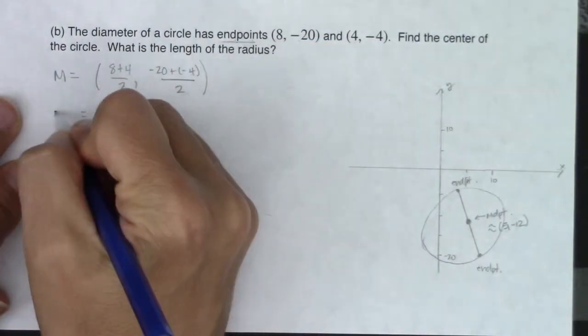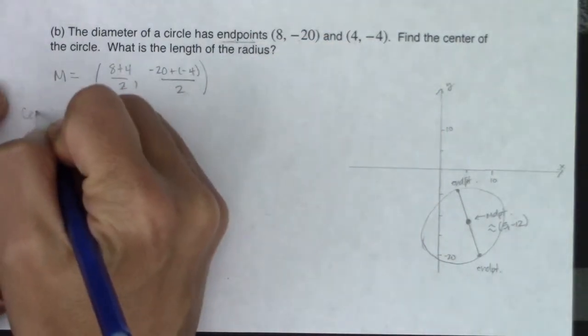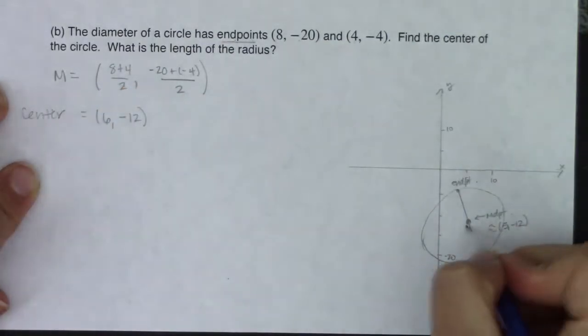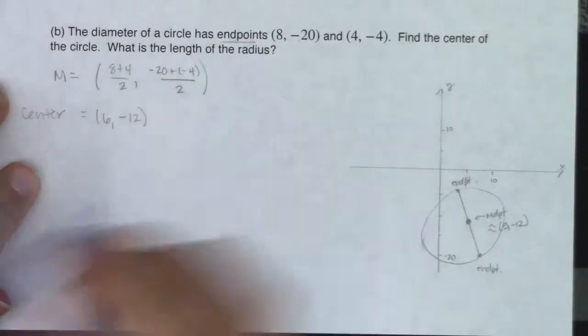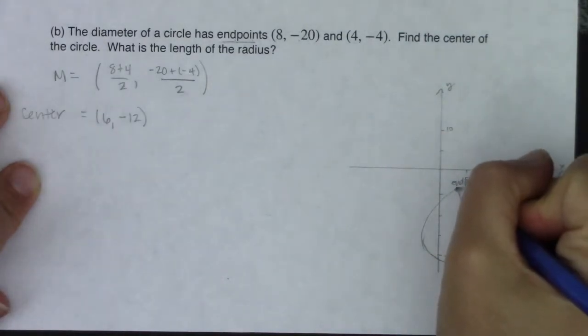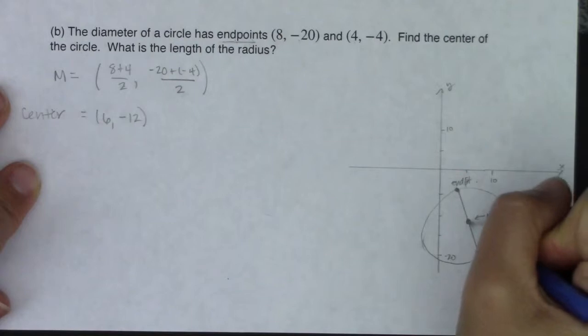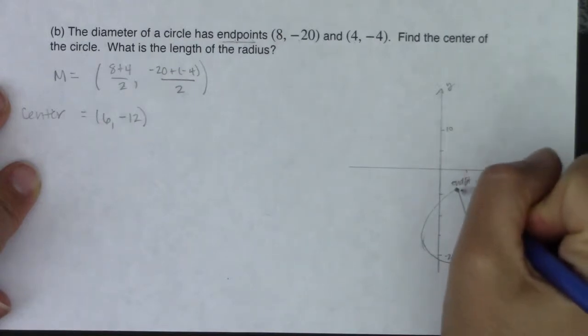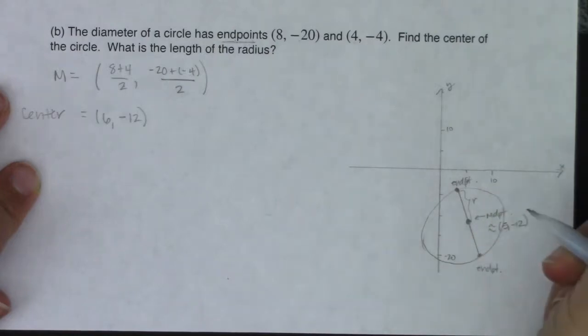8 plus 4 is 12. 12 divided by 2 is 6. Negative 20 minus 4 is negative 24. Negative 24 divided by 2 is negative 12. Hey, that's not too far off from what I was guessing. So there's my midpoint, or I should say this is the center of my circle. And then it says, what is the length of the radius?